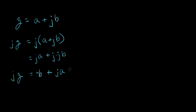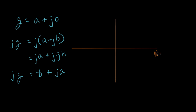So now we have expressions for Z and JZ, and I want to go plot these on a complex plane and see what they look like. Here's the real axis, here's the imaginary axis. Let's first plot Z. Let's say Z has a large real value, and that would be A. And let's say that B is a smaller value. That means that Z is at a location in the complex plane right there.